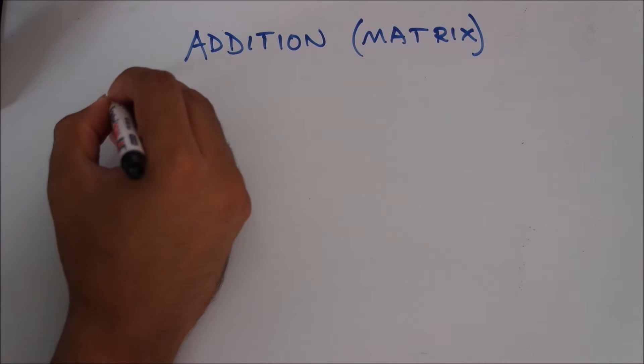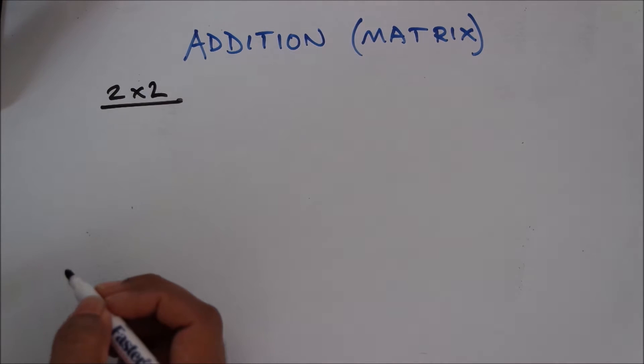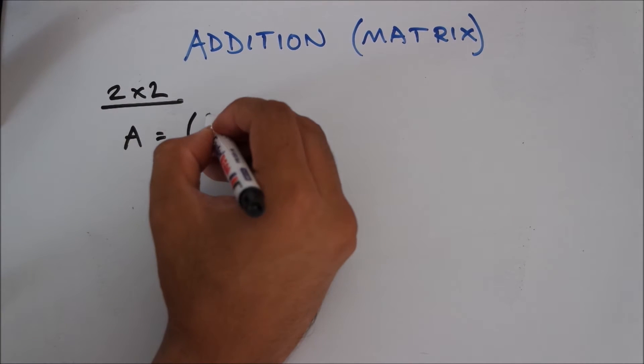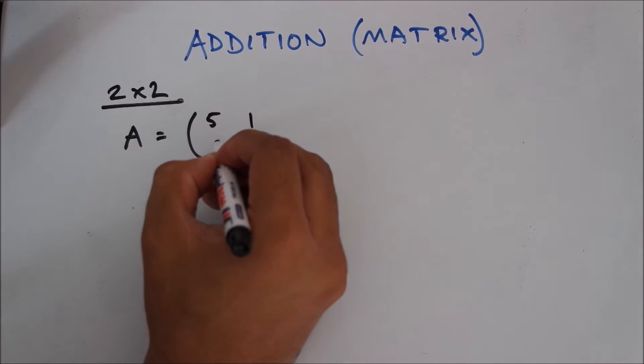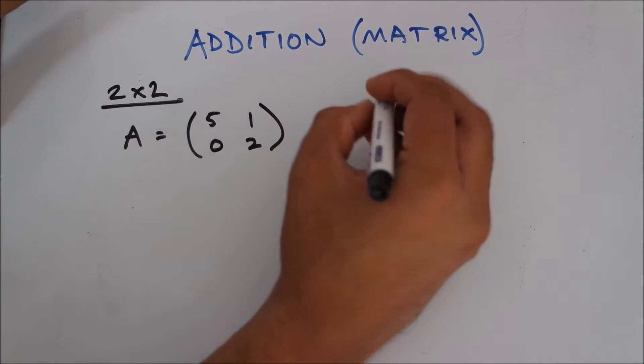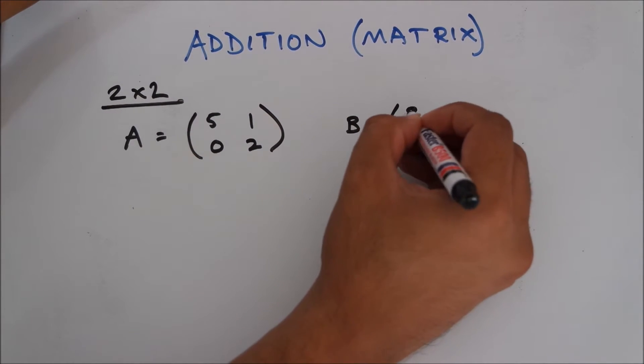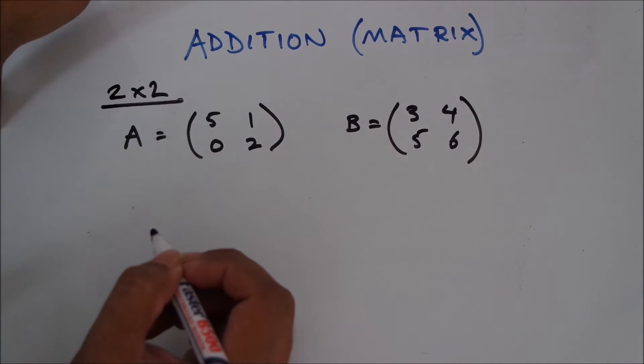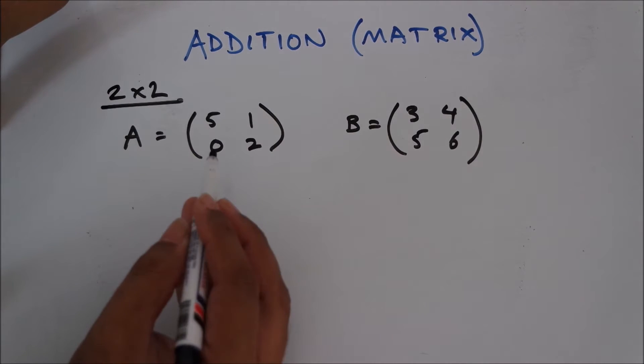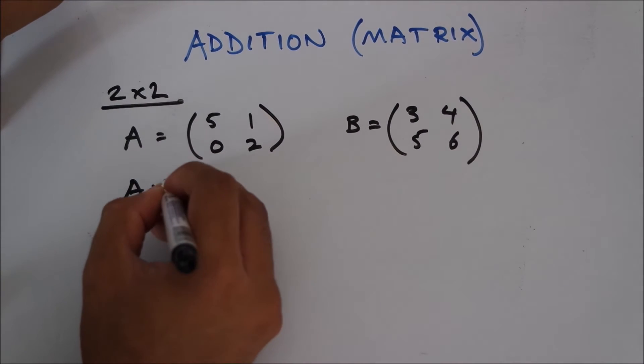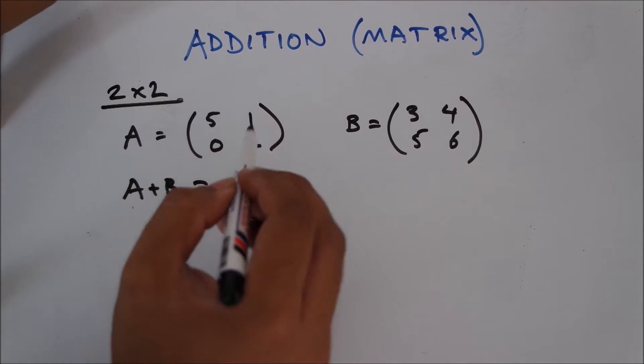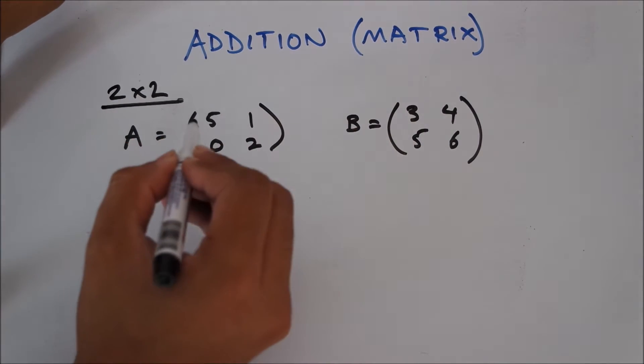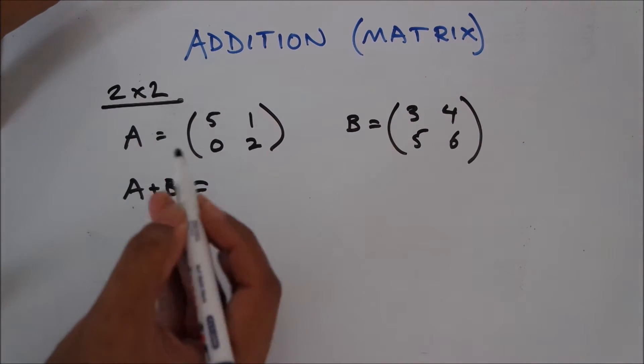We're going to start with a simple 2 into 2 matrix. Say you have two separate matrices, matrix A which is 5, 1, 0, 2, and matrix B which can be 3, 4, 5, 6. The first thing you need to do while adding these up, you have to add each individual number to the other one which is assigned on the same exact location of the other matrix.